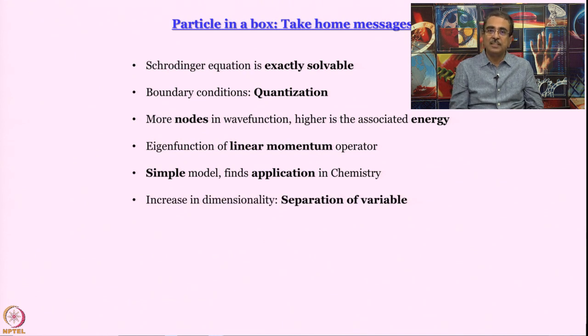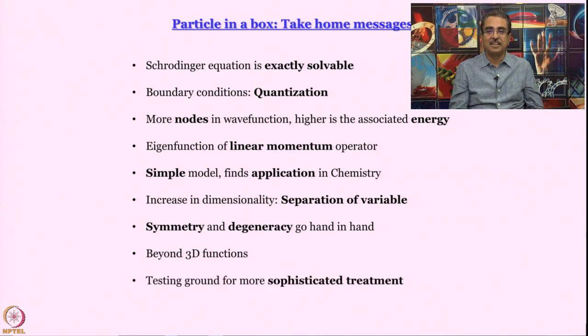When we make a measurement, we will see either plus h cross k or minus h cross k. Average value of linear momentum is going to be 0. The simple model yet it does find application as a starting point for many interesting chemical systems. We have started working on separation of variables which is going to be a very important tool in our subsequent discussion. And finally, we have learned that symmetry and degeneracy go hand in hand. Symmetry is going to be an important parameter in chemistry.